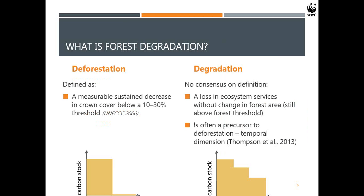So what is forest degradation? It's important to determine the difference between deforestation and degradation. Deforestation is pretty well-defined — it's been identified as a sustained decrease in crown cover, easily seen with remote sensing. You can see forests basically disappearing. If you look at deforestation relative to carbon stock, after deforestation your carbon stocks go close to zero — your biomass is removed.